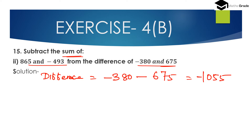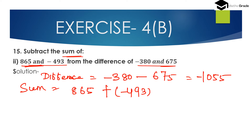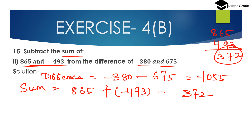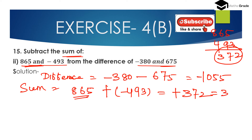Now find out the sum of 865 and minus 493. When we add two integers with different sign, we have to subtract the smaller integer from the bigger integer. Here bigger integer is 865 and smaller is 493. Computing 865 minus 493 gives 372. We place the sign of the bigger integer — 865 is positive — so the sum is plus 372.